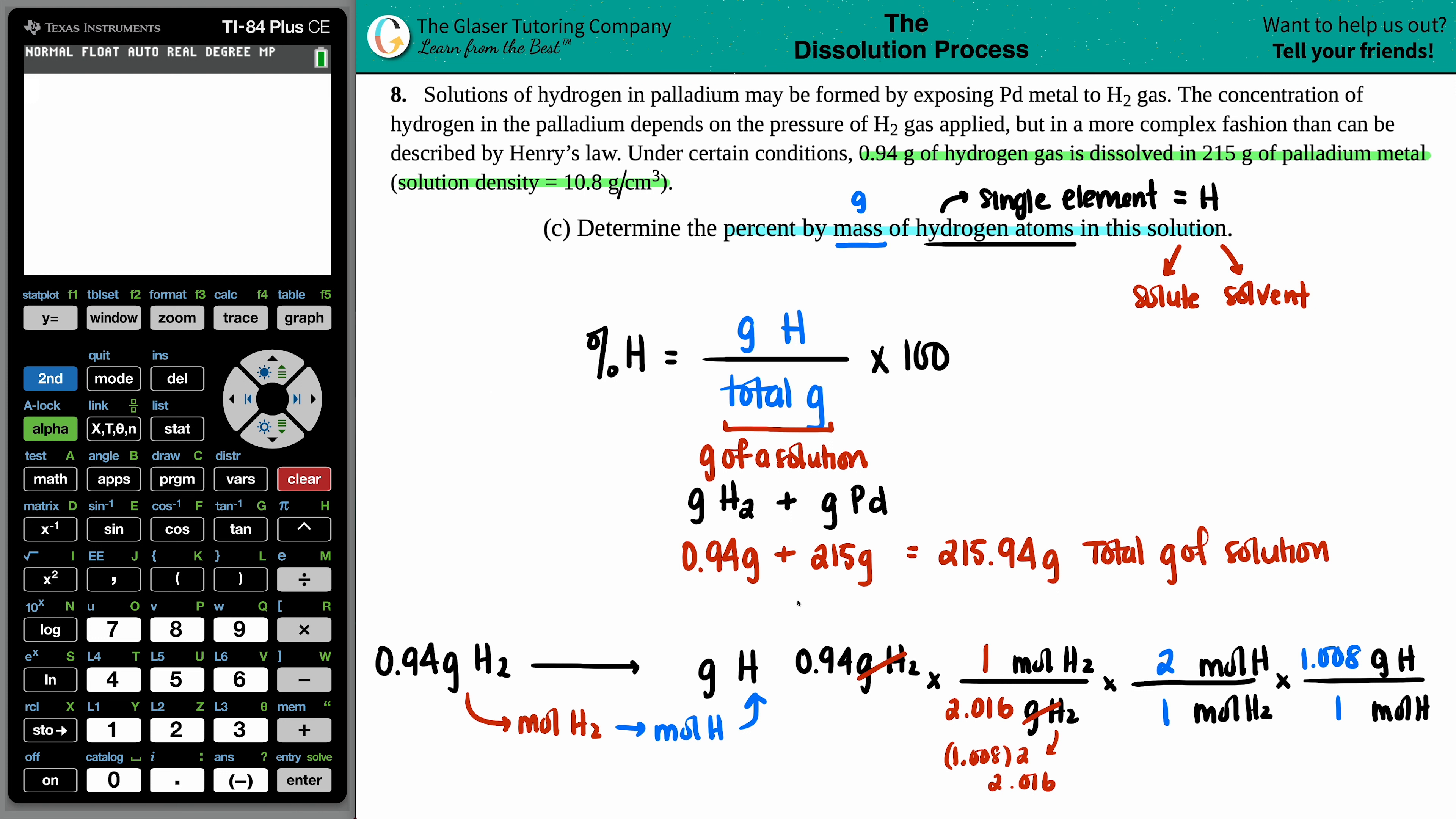Now we can basically just do the math. But it looks like I think we have the same number, because if we do this math, 0.94 divided by 2.016 times 2 times 1.008, you get the same number. So in this case, it is the same. But it's always good to just do the math out just to make sure. So this is going to be the 0.94 grams. And now, we are ready to do our percent.